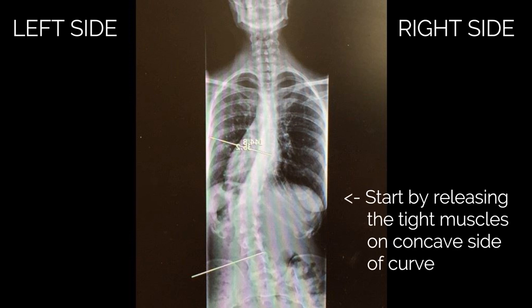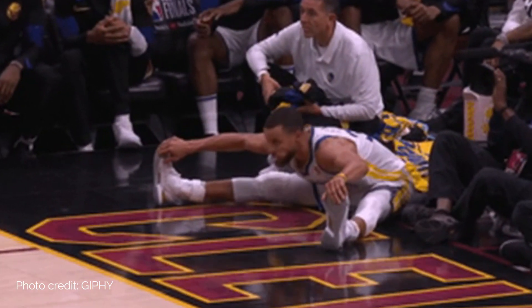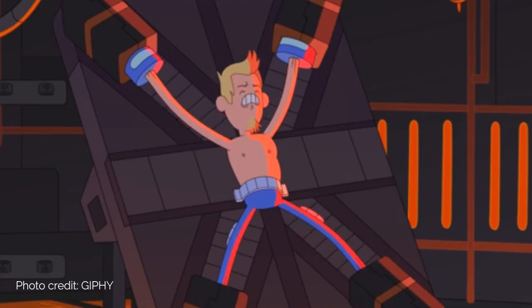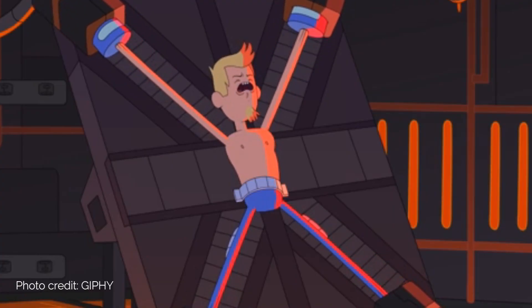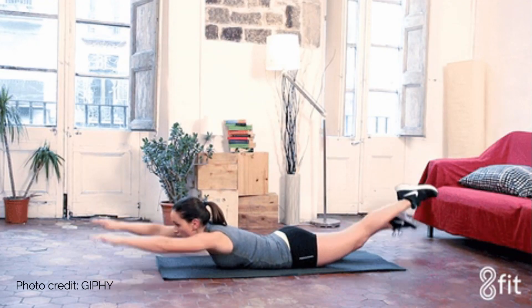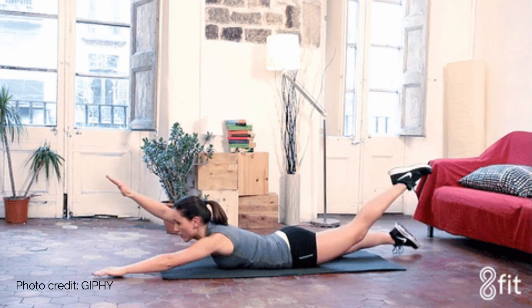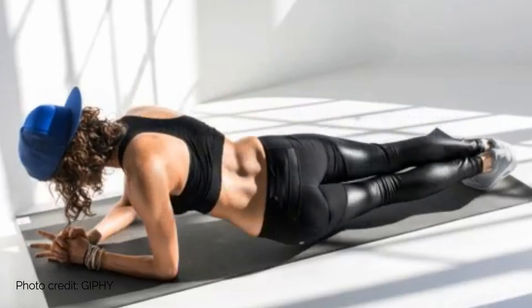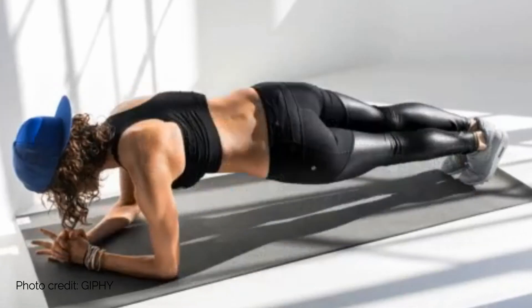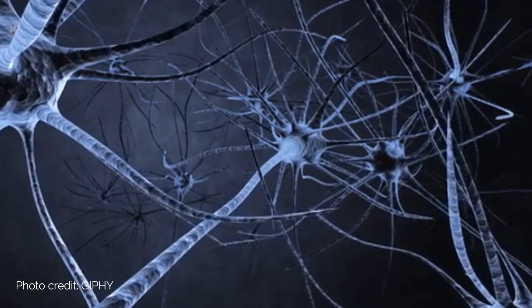These muscles are, in most cases, what initially caused the curve. You won't make much progress if you just focus on releasing the tight muscles on the convex side, because the muscles on the concave side will still be tight, still creating the curve. Traditional stretching and strengthening exercises usually don't accomplish much when you're trying to straighten a scoliotic curve because they don't change the messages that the brain is sending to the muscles to stay tight, and they don't have a lasting effect on the baseline level of muscle tension being set by the nervous system.